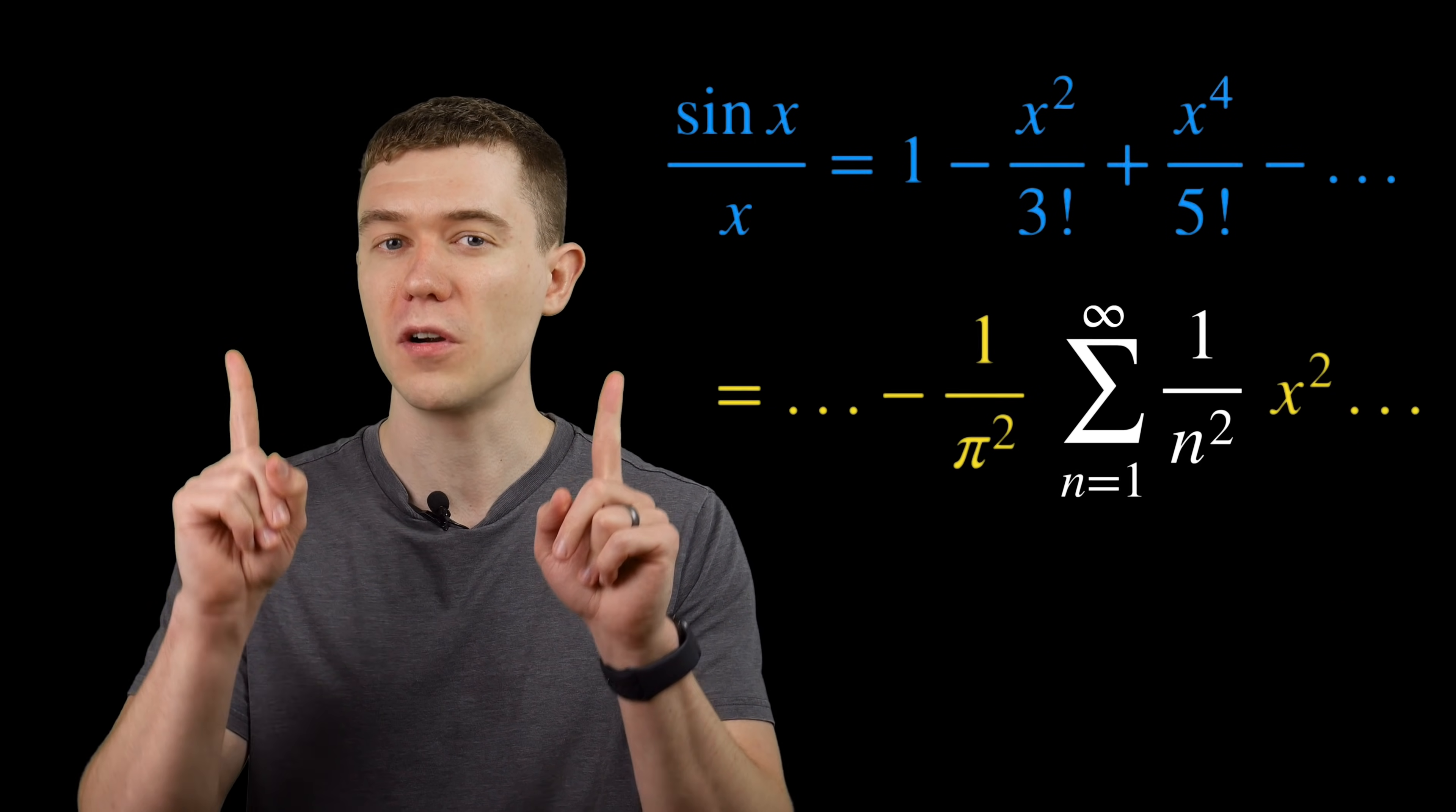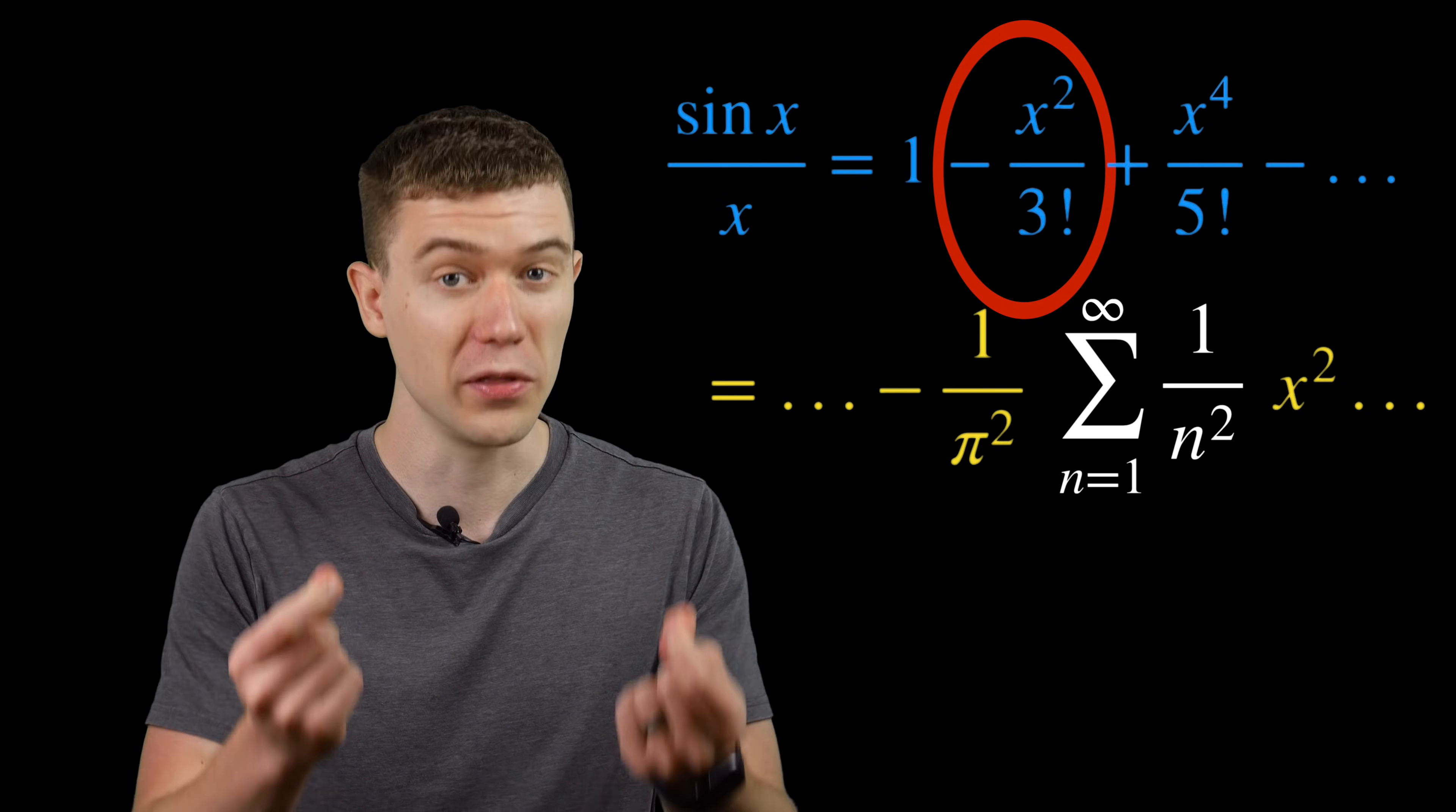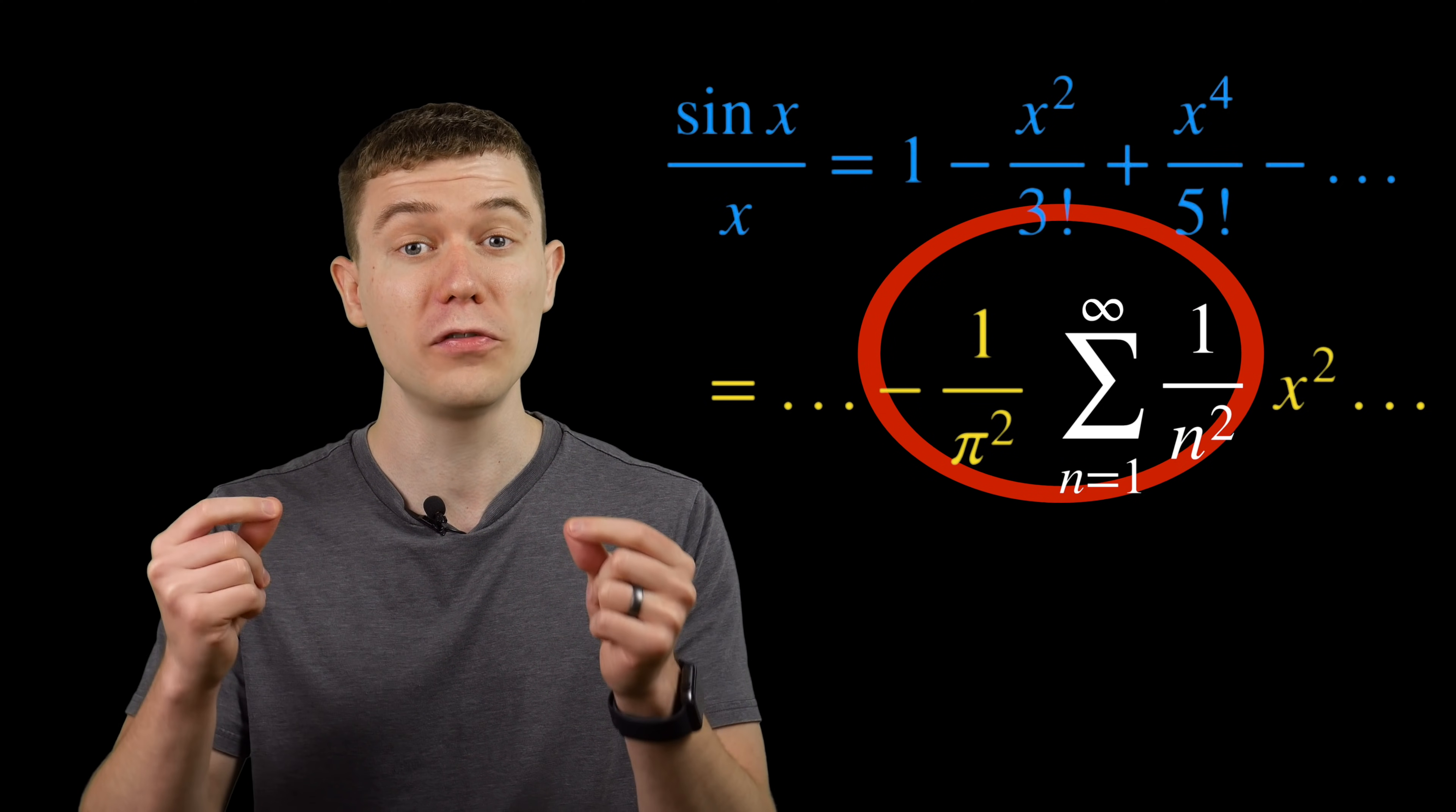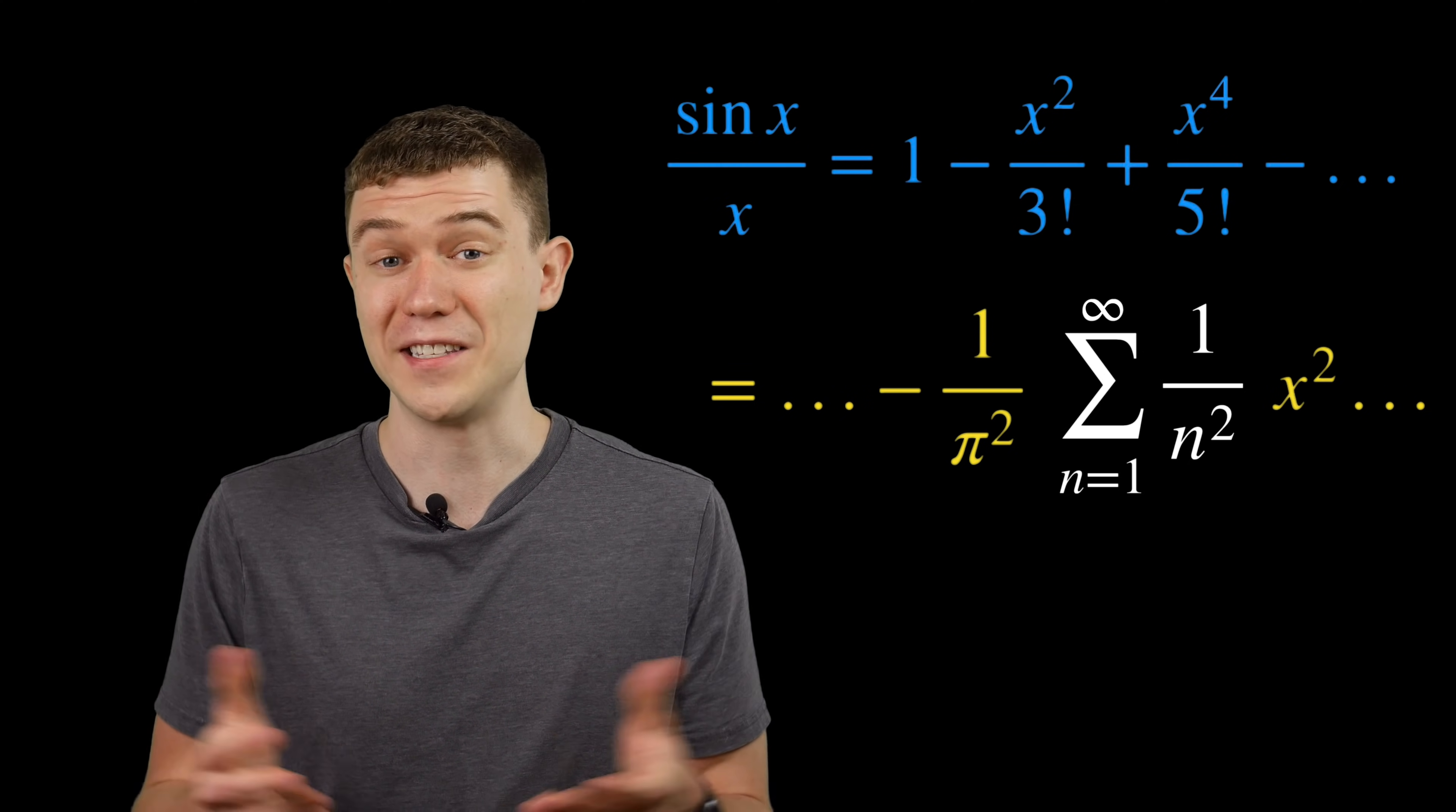And since the equations are equal, the coefficient of the x squared term on the left has to be the coefficient of the x squared term on the right. This is sometimes called matching coefficients. And so now all we have to do is solve for the sum.